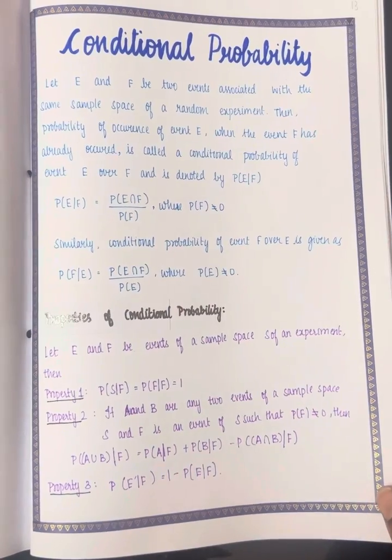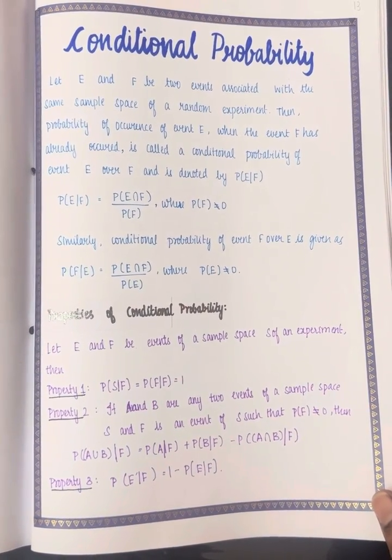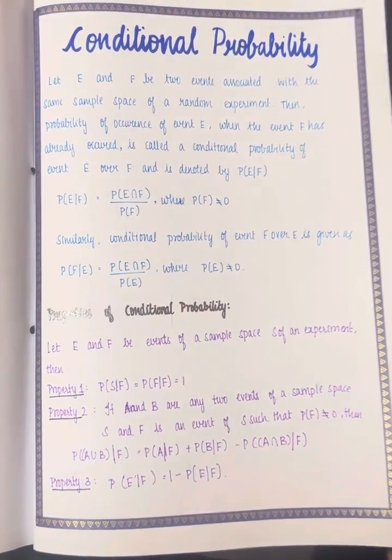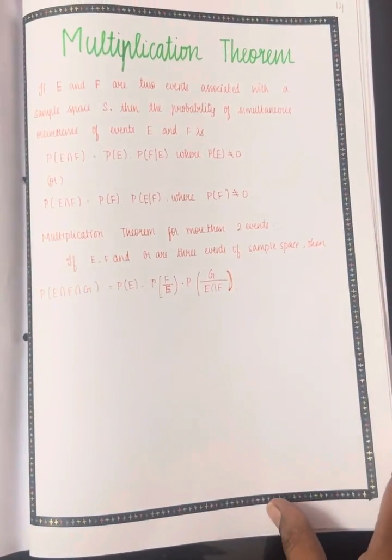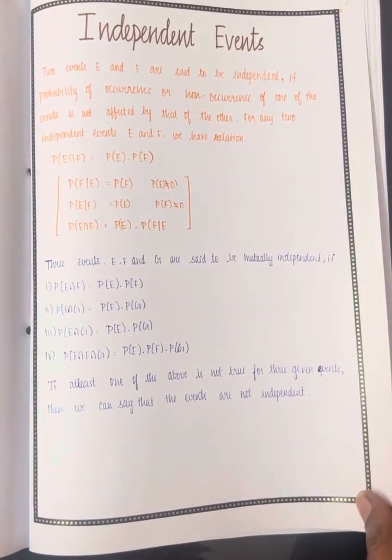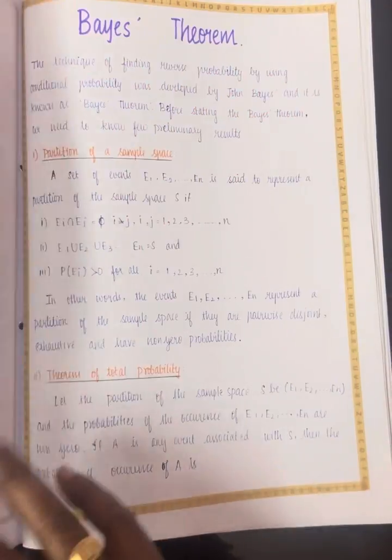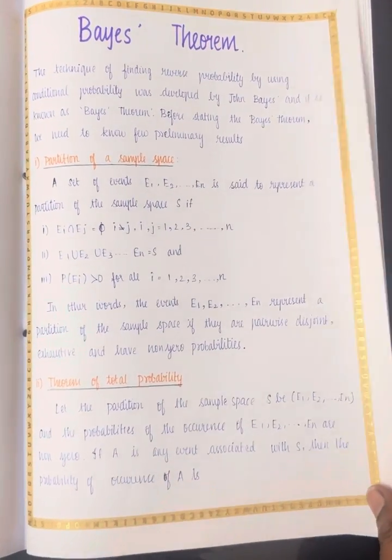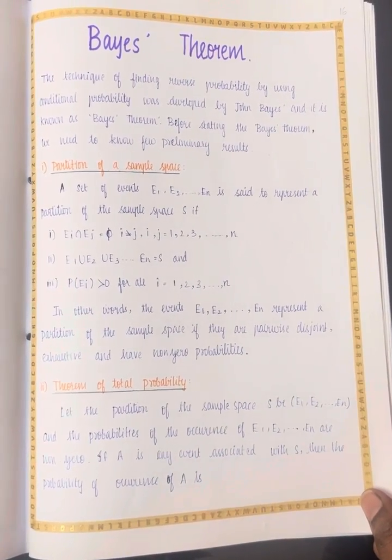The class 12 focus is on conditional probability, including its properties and the multiplication theorem. The project also covers independent events and their properties, Bayes theorem, and partition of a sample space.